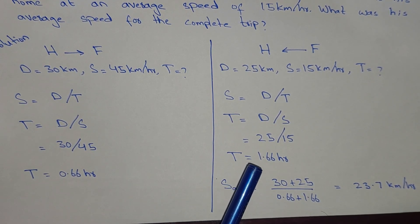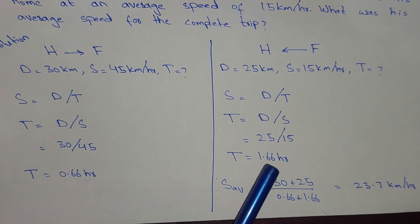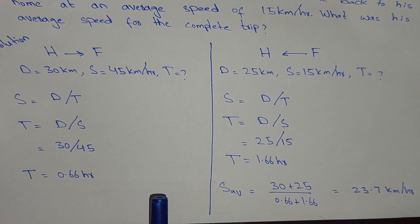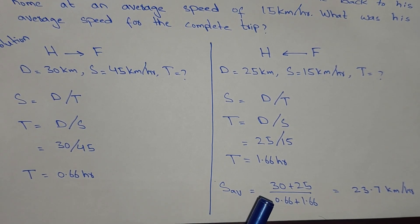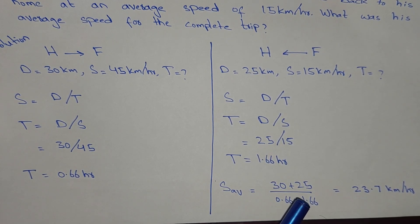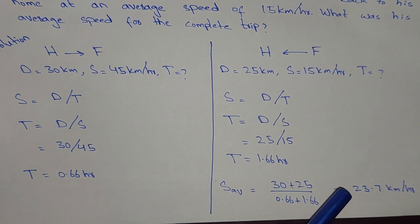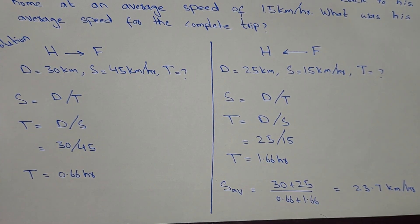The time when he was coming back was 1.66 hours. To find the average speed, we take the total distance — the distance going plus the distance coming back — and divide by the total time going plus the time coming back. So the average speed works out to 23.7 kilometers per hour. I hope you understand, thank you for watching this video.